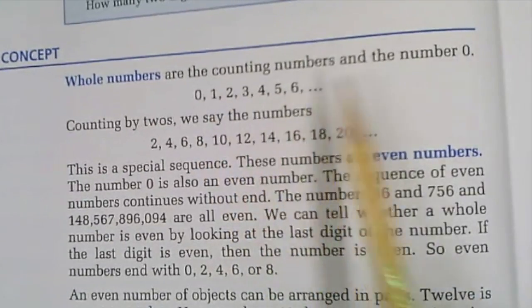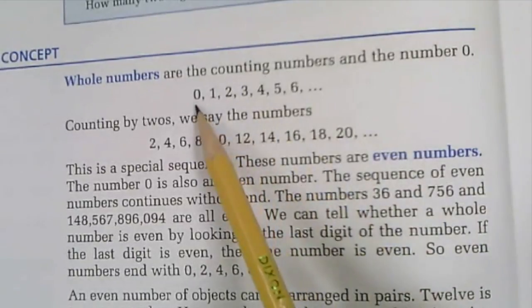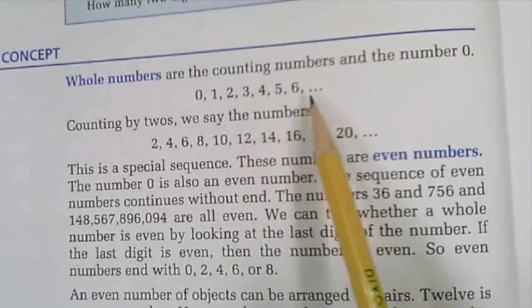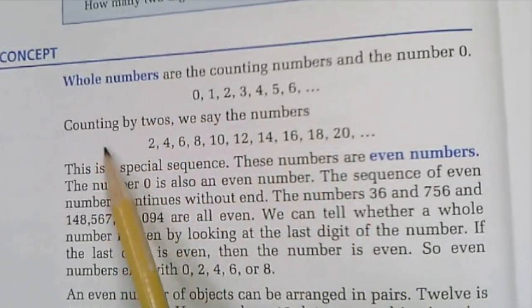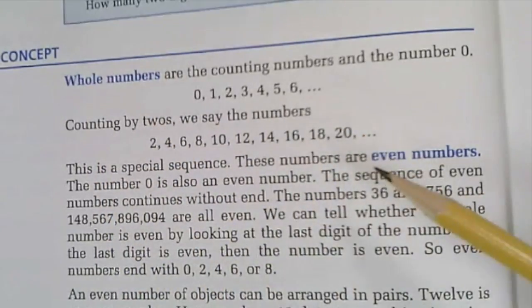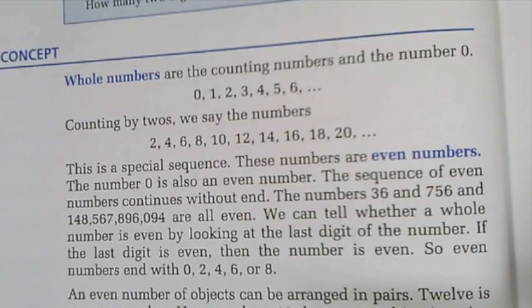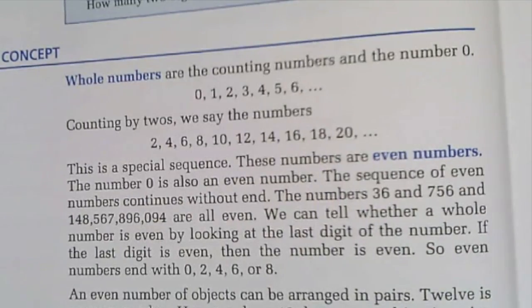Counting numbers were 1, 2, 3, 4, 5, 6, all the way up to whatever. Now we have 0, 1, 2, 3, 4, 5, 6 - those are all whole numbers. Counting by twos, we say the numbers 2, 4, 6, 8, 10. What are those? Are those even or odd?